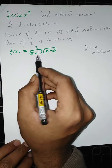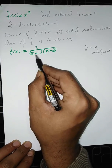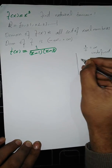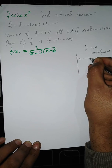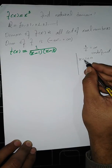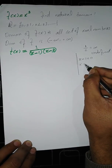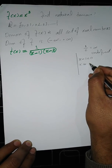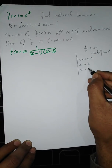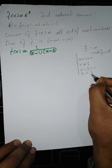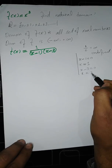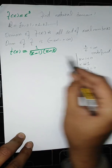The denominator has factors x minus 1 and x minus 3. Setting x minus 1 equal to 0 gives x equals 1, and setting x minus 3 equal to 0 gives x equals 3. So for x equals 1 and x equals 3, this function becomes undefined.